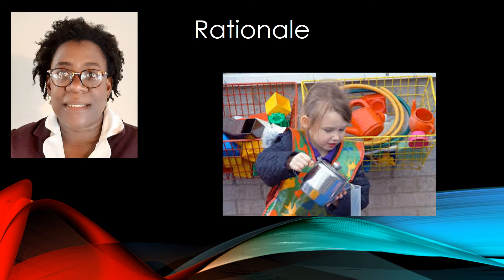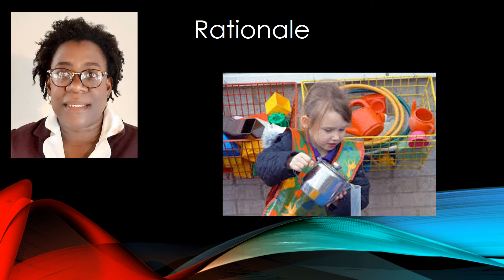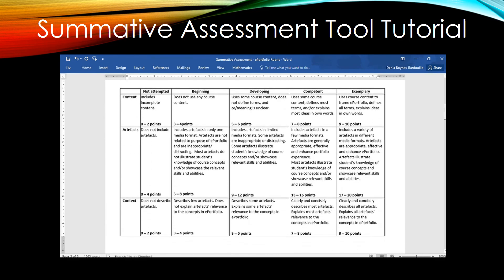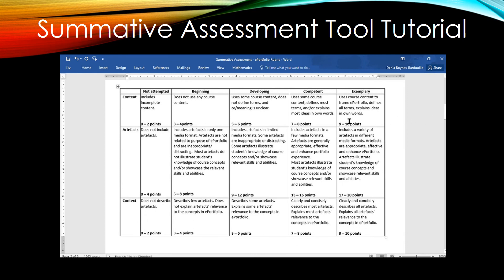We will now look at some tutorials that will help you hone your assessment skills using rubrics. In this rubric, there are two sections — one at the top and the other along the side. At the top, there are five sections: Not Attempted, Beginning, Developing, Competent, and Exemplary.